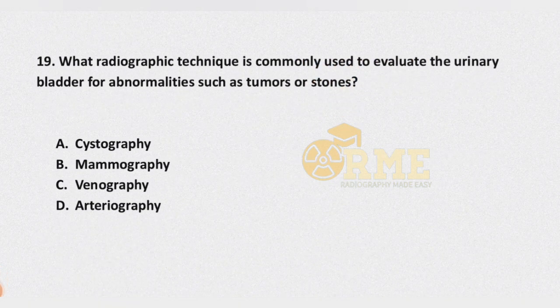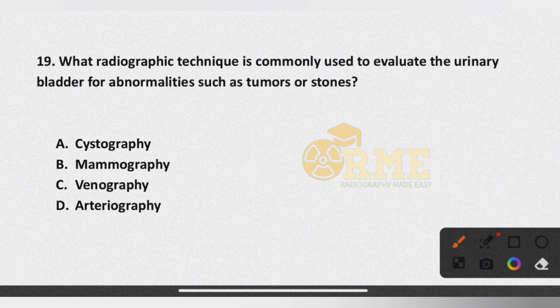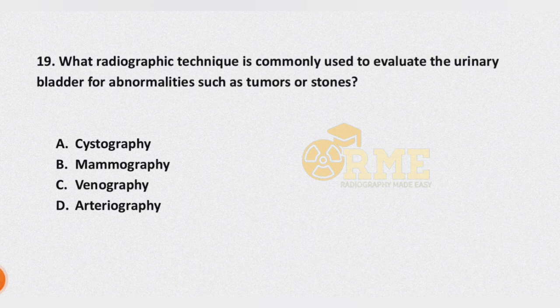Question number 19, the last question of this MCQ series: which radiographic technique is commonly used to evaluate the urinary bladder for abnormalities such as tumors or cystones? Options are cystography, mammography, venography, and arteriography. The correct answer is clearly cystography.